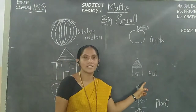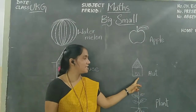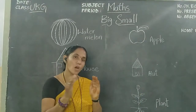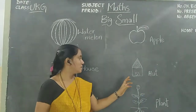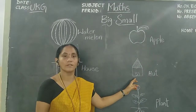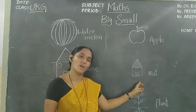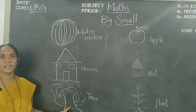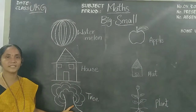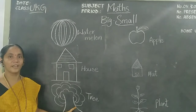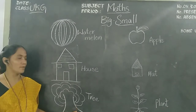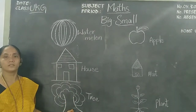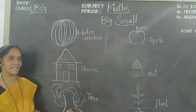What is this, children? This is a house. It looks very small. What is this, children? This is a tree. It looks like a big tree with heavy branches.